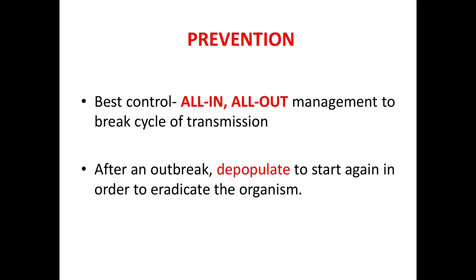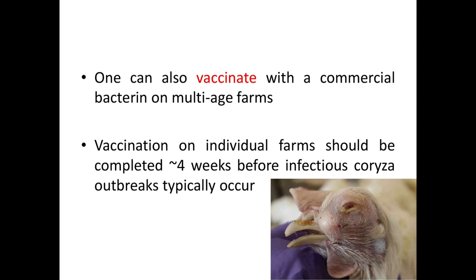Coming to prevention and control: the best control is all-in all-out management to break the cycle of transmission. After an outbreak, depopulate the entire flock to start again in order to eradicate the organism, because once the disease occurs it spreads very fast due to its very short incubation period. One can also vaccinate with a commercial bacterin on multi-age farms, and vaccination should be completed approximately four weeks before Infectious Coryza outbreaks typically occur.